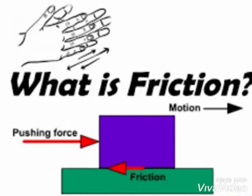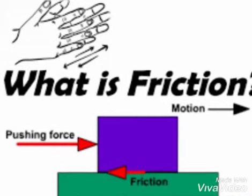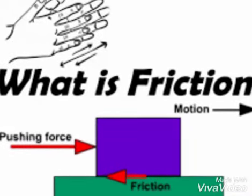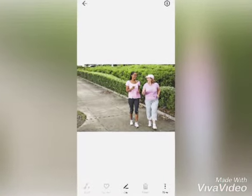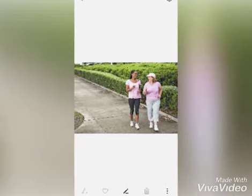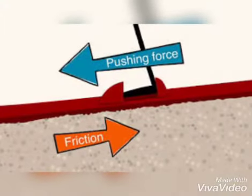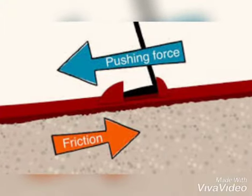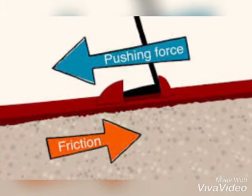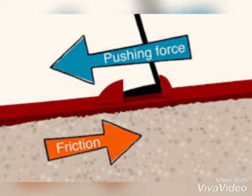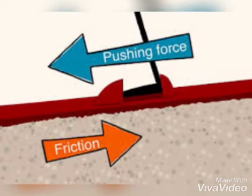Friction is a force that resists motion between two objects in contact with each other. Smoother surfaces have less friction while rough surfaces have more friction. Like when we press the brakes of the car, the brakes stop the motion of the car, meaning it creates friction between the tires of the car and the road.